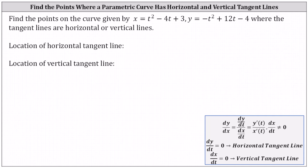Let's begin by determining the location of the horizontal tangent lines. We'll set dy/dt equal to 0 and solve for t. dy/dt equals the derivative of negative t squared plus 12t minus 4 with respect to t, which is negative 2t plus 12. Now we set this equal to 0 and solve.